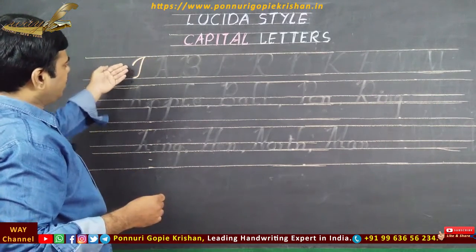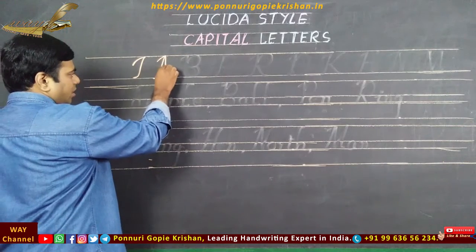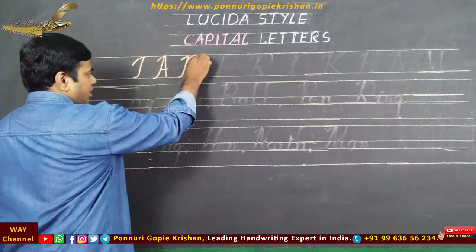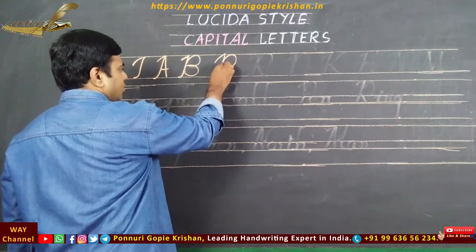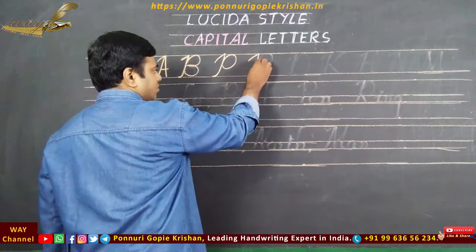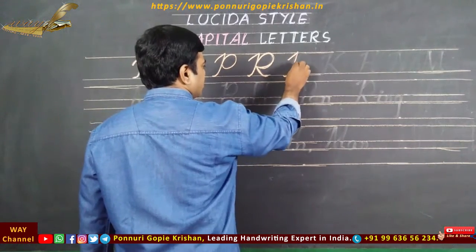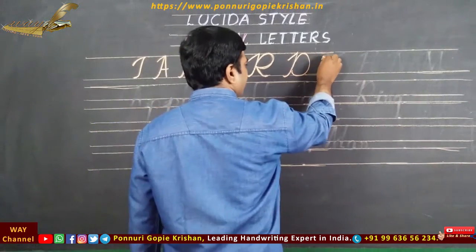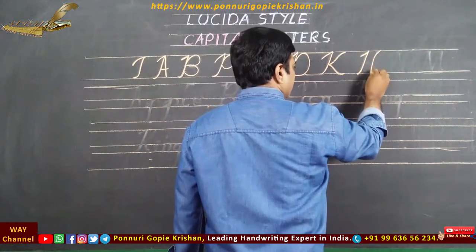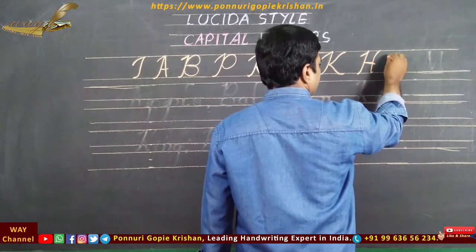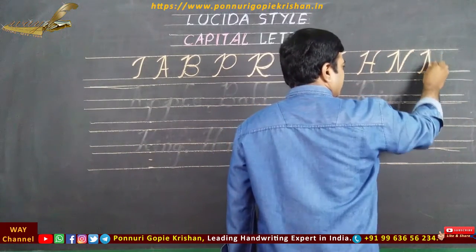This basic stroke is demonstrated with counts: 1, 2, 3. It forms the letters A, B, T, R, D, K, H, N, and M.